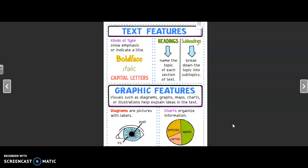Another type of graphic feature is a chart, and that just helps organize information. We know a lot of people like apples, fewer people like pretzels, but the least amount of people like carrots.